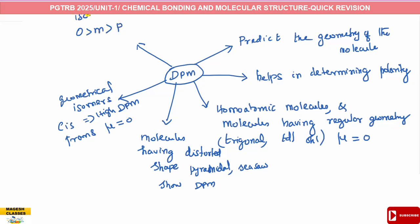For di-substituted benzene, the ortho dipole moment value is greater than the meta value, which is greater than the para value. For the ortho isomer (R2 system), the dipole moment is approximately 2.54 Debye, for the para isomer it is almost zero, and for the meta isomer it is 1.48 Debye.